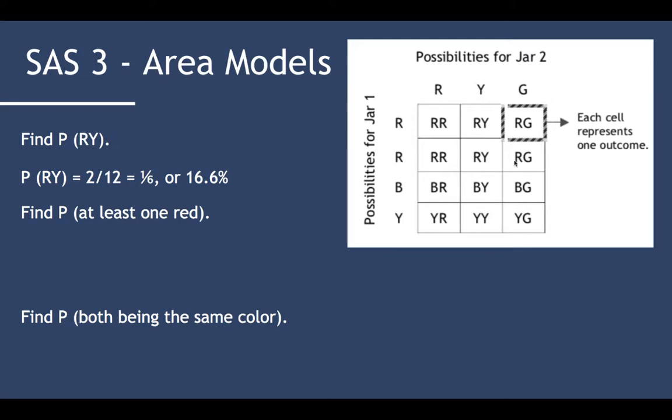Find P(RY). There are two of them out of the total 12. 2/12 is 1/6 or 16.6%. Find P(at least one red). We just count all the reds. So there's one, two, three, four, five, six, seven, eight. Eight of twelve, or two-thirds, 66.7%. So we just look at any of them that have an R, whether it's a marble or a cube, it doesn't matter.